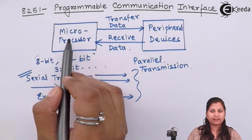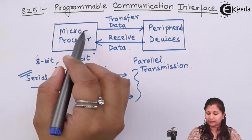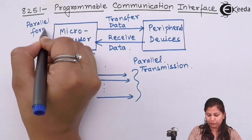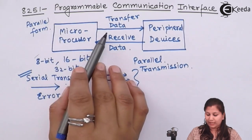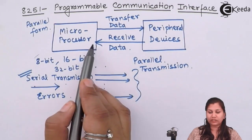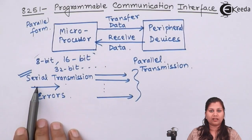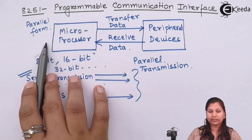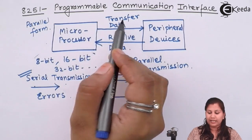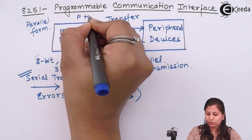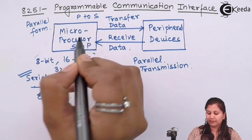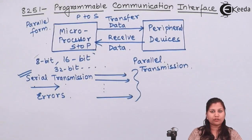The microprocessor computes all data in parallel form. So when it has to transmit data, it has to convert the parallel data into serial data. Also when it receives data, it receives it in serial form and has to convert it back into parallel form so it can process that data. Every time it transmits, it performs parallel-to-serial conversion, and when receiving, it performs serial-to-parallel conversion.